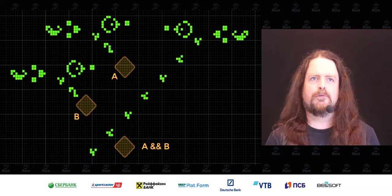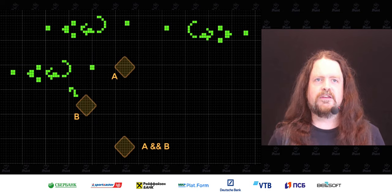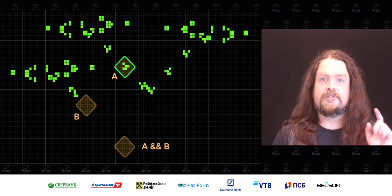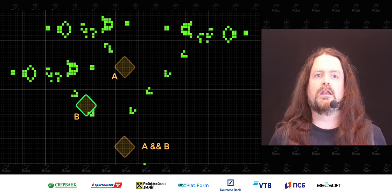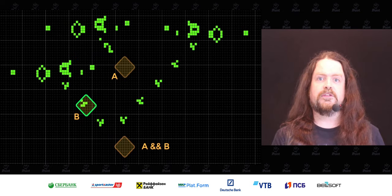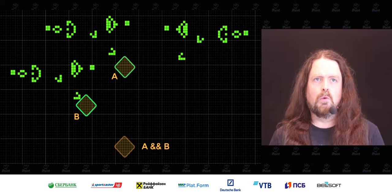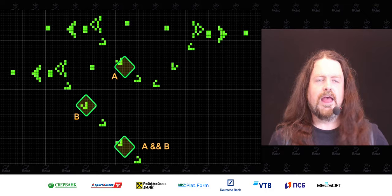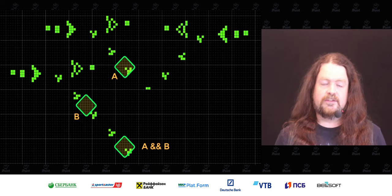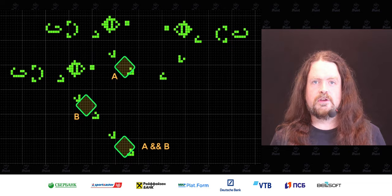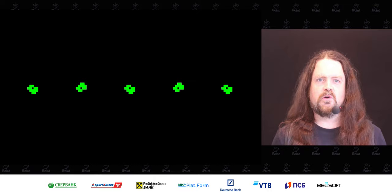It turns out we can use the Game of Life to create logic gates. Here is an AND gate implemented in the Game of Life, with inputs A and B and output A AND B. If one input is true and we run the circuit, the output is still false. Set both inputs to true, run the circuit, and we get truth on the output. If you can build logic gates in any system, you can use those to create circuits, and if you can create circuits, you can create computers.